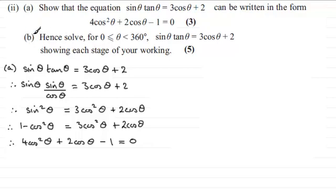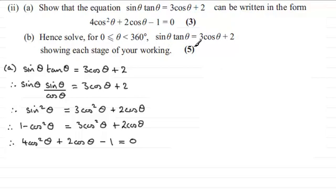For part b, it says: hence solve for theta, where theta is greater than or equal to 0 and less than 360 degrees, the equation sine theta tan theta equals 3 cos theta plus 2, showing each stage of your working, for 5 marks.